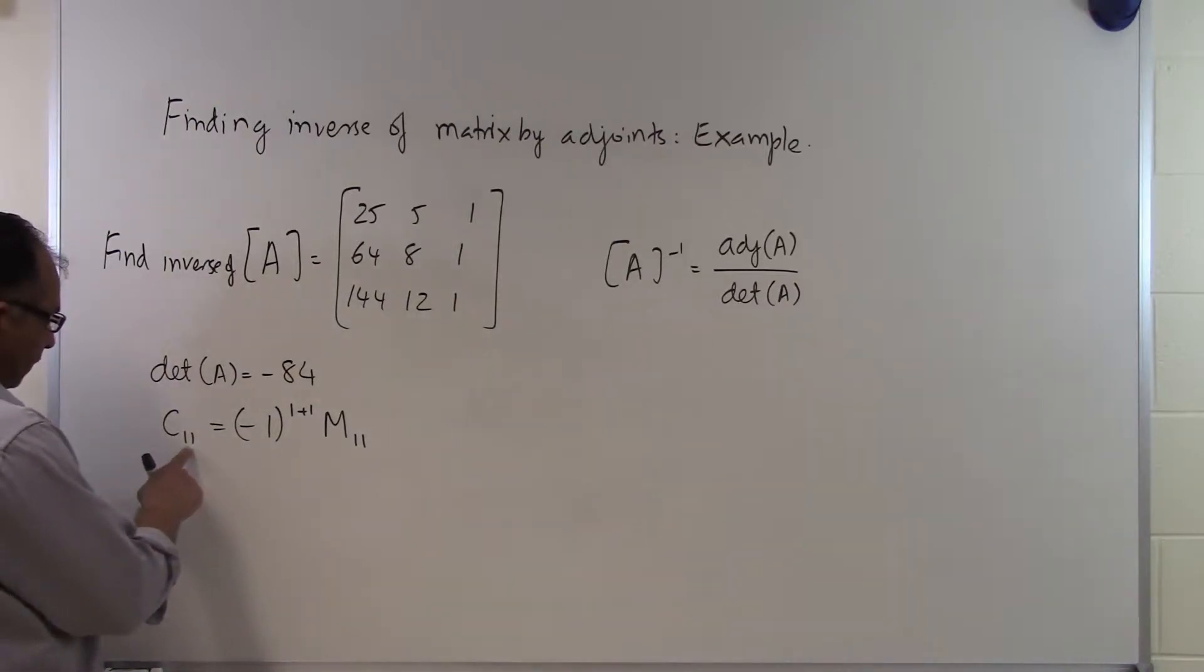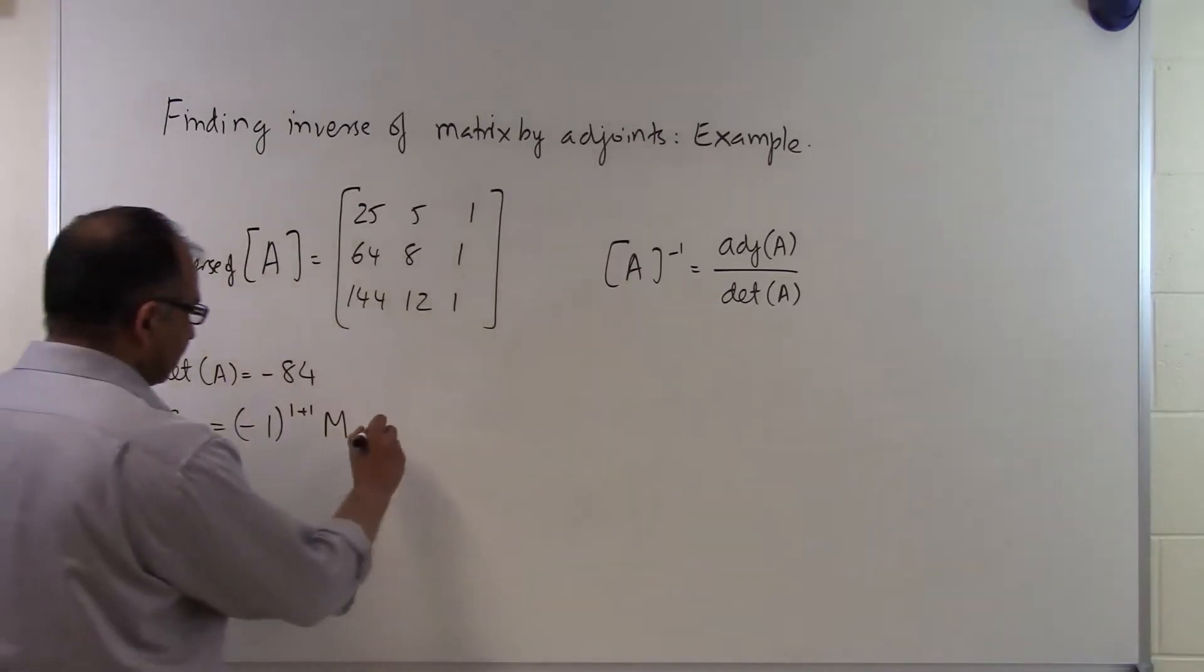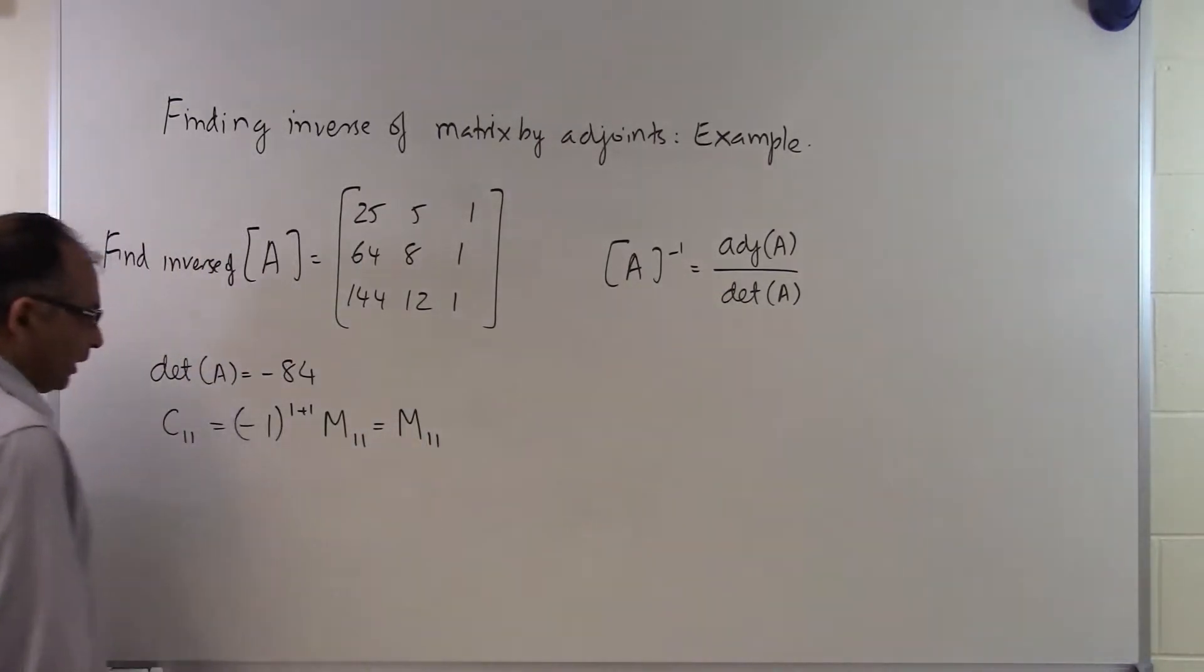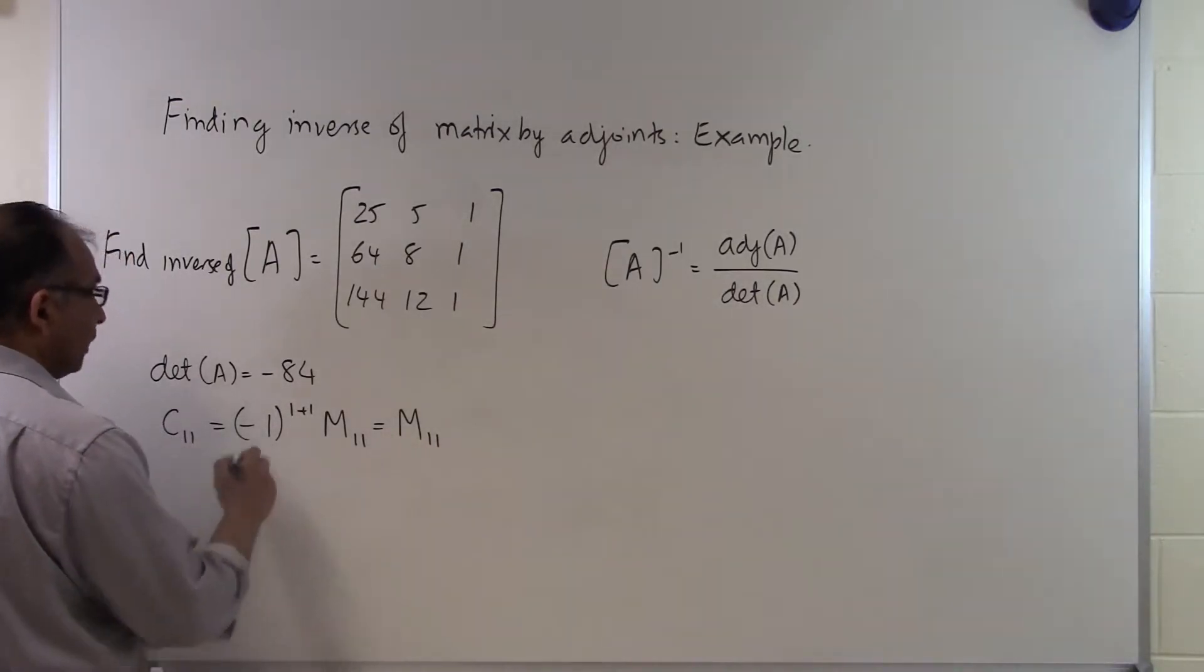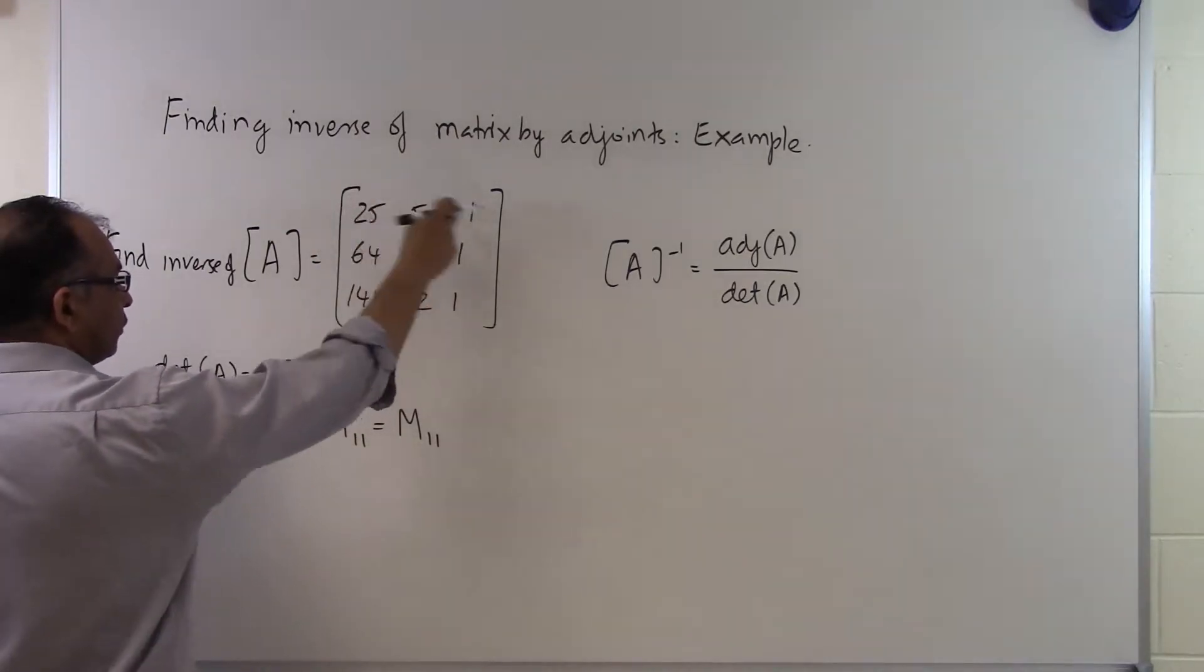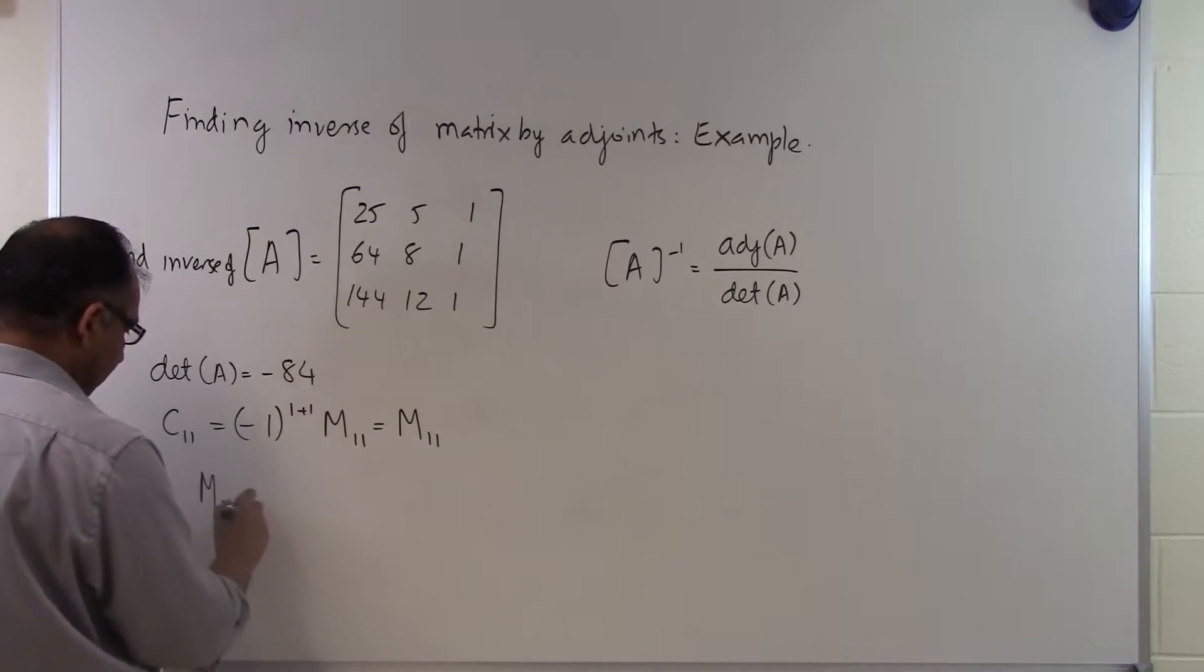M11 is the minor of the matrix corresponding to A11. So C11 is the first element of the cofactor matrix, and that's equal to minus 1 raised to the power i plus j, M11, where M11 is the minor corresponding to the A11 element. I find M11, the minor of the entry M11, by simply getting rid of the first row and first column. If I get rid of the first row and first column, I am left with 8, 1, 12, 1.